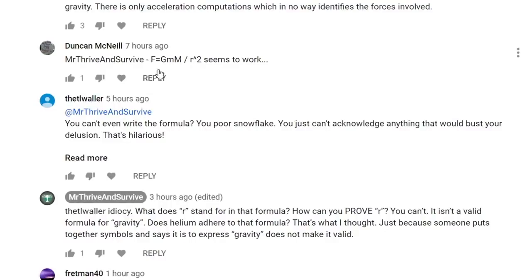Well, yeah, that's Newton's formula for gravity. That's the force of gravity equals big G, the gravitational constant, times the mass of object 1, the mass of object 2, divided by the radius, or the distance squared between them. That's pretty straightforward to me. Let me get a reply back. You can't even write the formula, you poor snowflake. You just can't acknowledge anything. It would bust your delusion. That's hilarious.